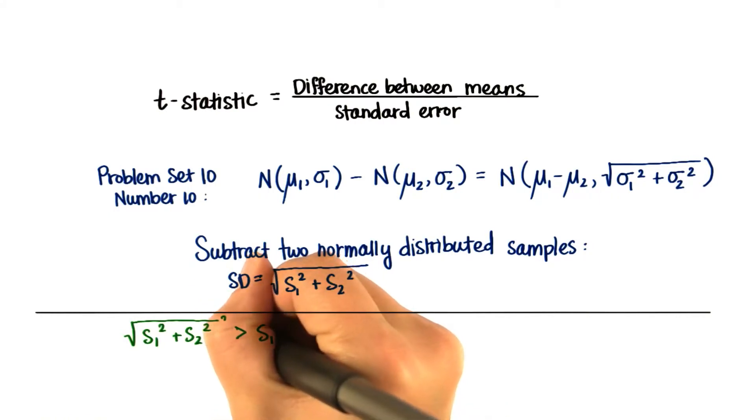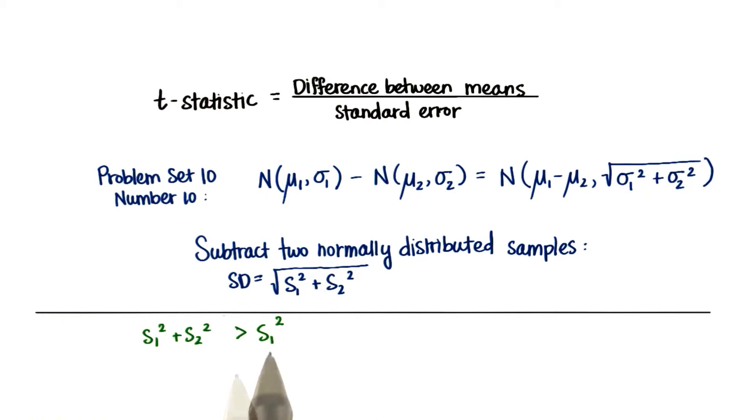Because if we square both sides, we get this. And we know that this is true. Because these are the same. And so therefore, if we add the variance of the second sample on this side, then this side will be bigger than just this.